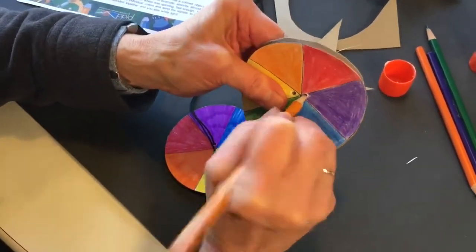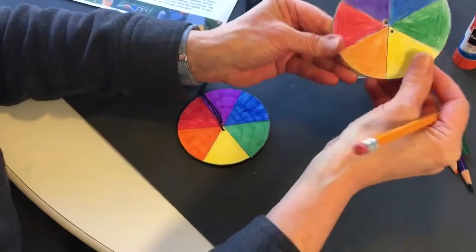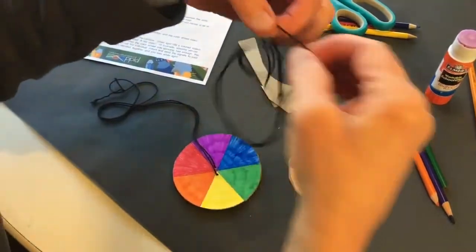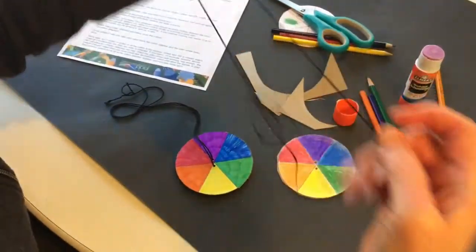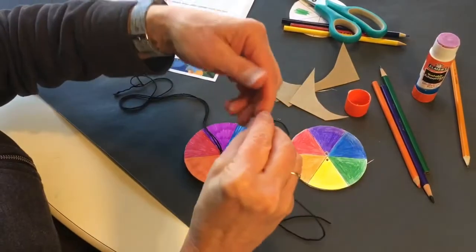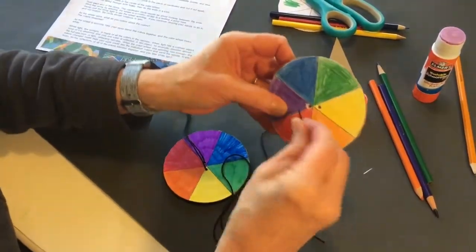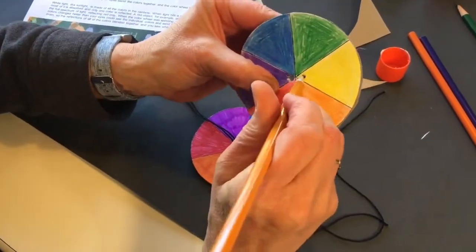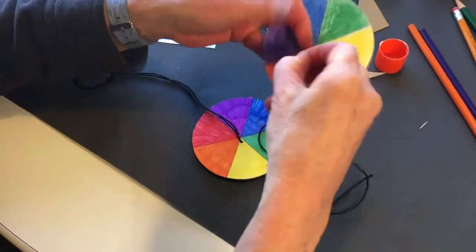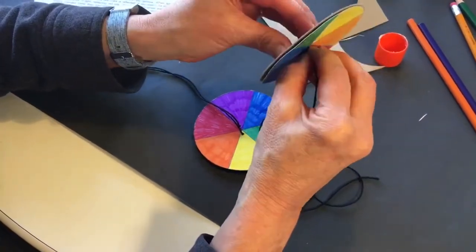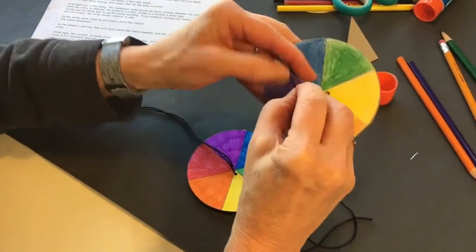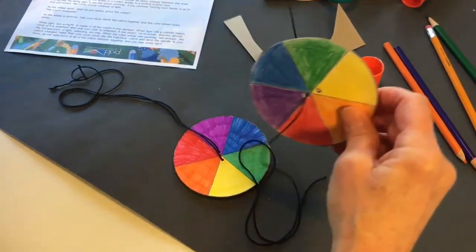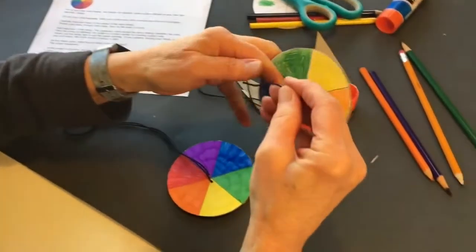Next you'll take your string. Now this part can be tricky too because getting the end of the string through the hole, I need to make that hole a little clearer to myself. I'm going to poke it through. There we go and then the other one we're going to poke through the other side, and pull it through.